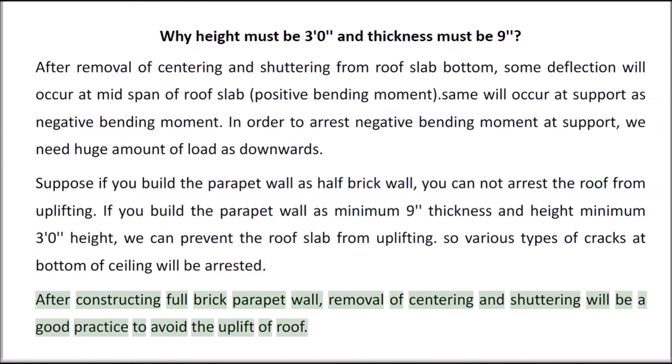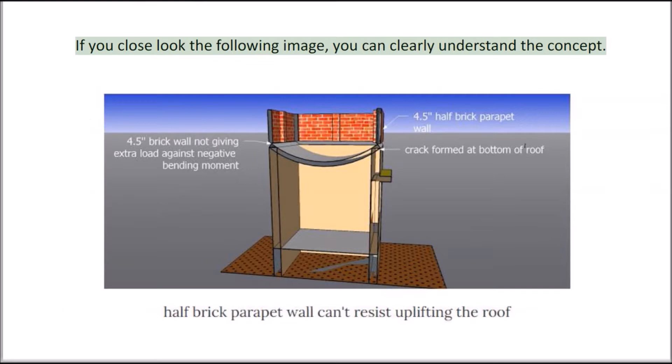After constructing a full brick parapet wall, the removal of centering and shuttering is a good practice to avoid the uplift of the roof. If you closely look at the following image, you can clearly understand this concept.